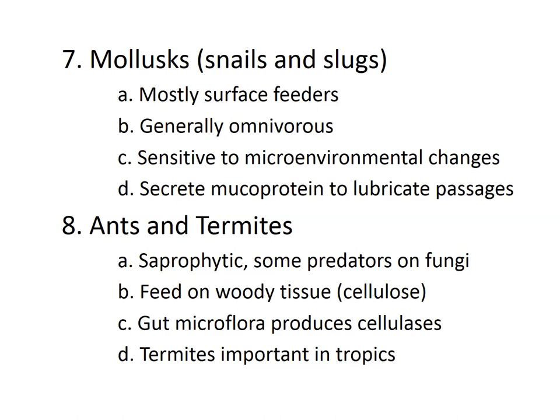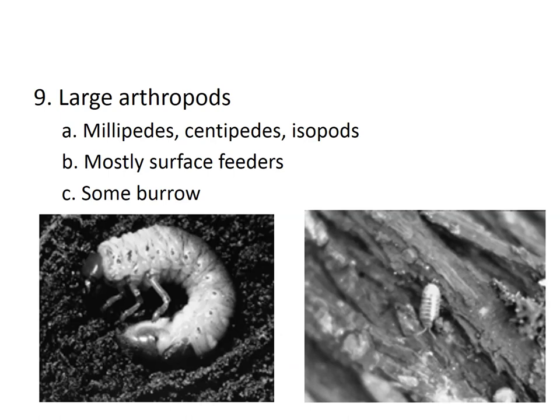Ants and termites are saprophytic; some are predators on fungi, and some feed on wood tissue. They have the ability to degrade cellulose. The gut of ants and termites hosts other cellulose-degrading microbes — the microflora in their gut produces cellulases that enable them to digest cellulose.